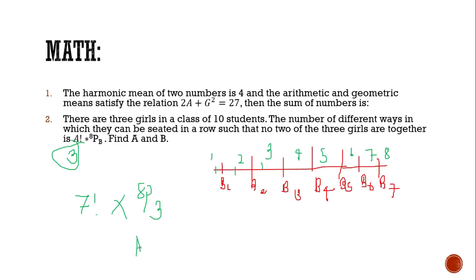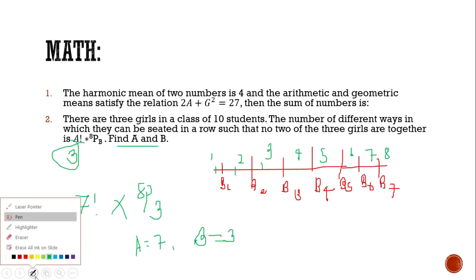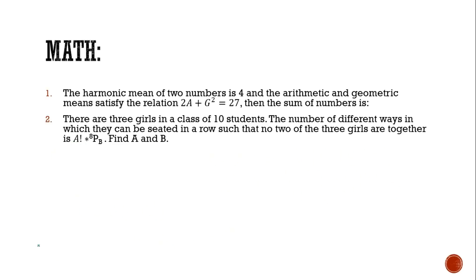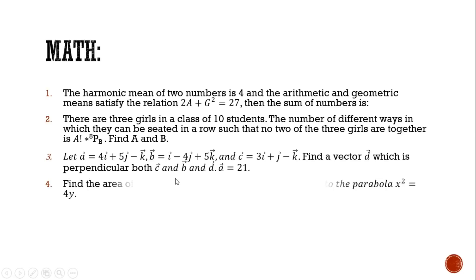A equals to 7, B equals to 3. Then B equals to 2, A equals to 2. Then B equals to 2, which is perpendicular to both C and B, and D dot A equals to 21.